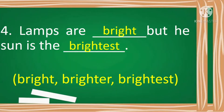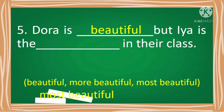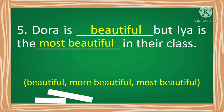Next number. Dora is blank, but Ia is the blank in their class — beautiful, more beautiful, most beautiful. The answers are: Dora is beautiful, but Ia is the most beautiful in their class.